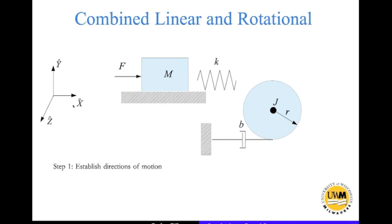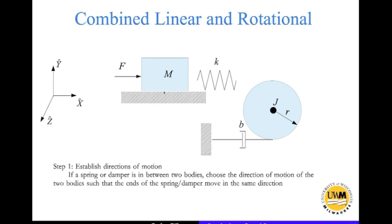The first step is to establish directions of motion. Now you have to be careful when you establish directions of motion. If there is a spring or damper between two bodies, we try to assign directions of motion in a way that the spring or damper is in extension. So this spring is between M and J, so we need to put this in extension.